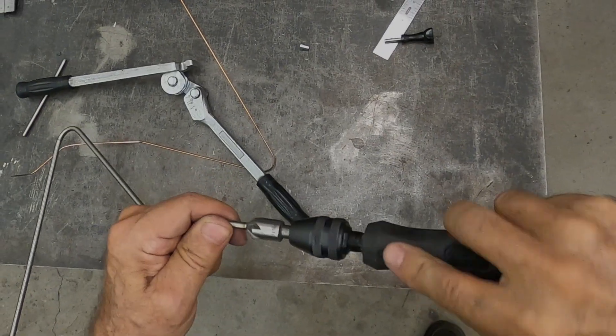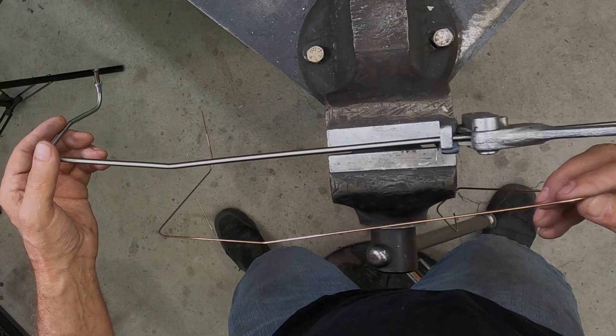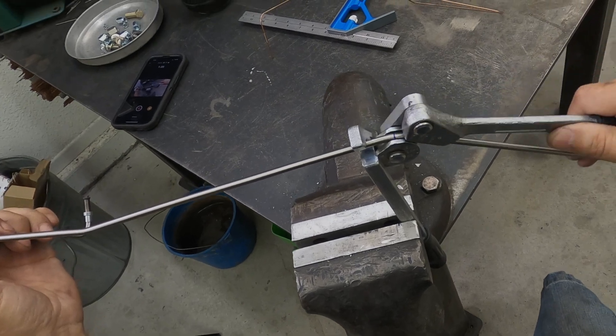This shot isn't in order but it shows the deburring process. I use a file for the outside. When you are done with the wire templates you can simply transfer the pattern over to the brake line tubing.